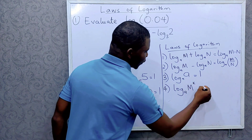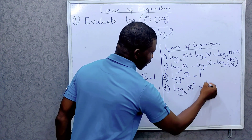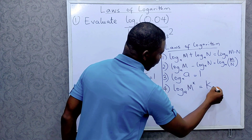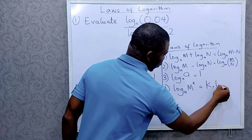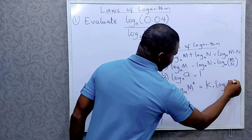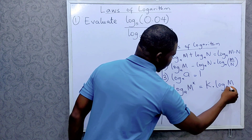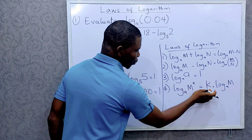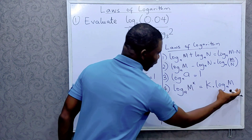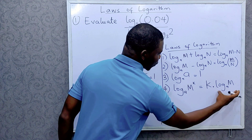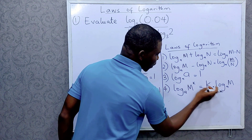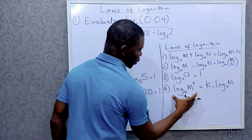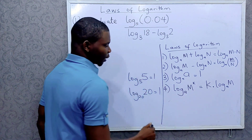Number 4: when I have a logarithm expression written as log base a of m raised to power k, I can rewrite this as k multiplied by log base a of m. So I can take this power to the front and multiply the log without the power — that's what this law says.